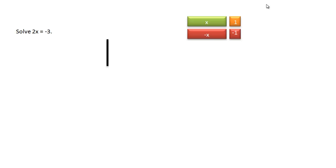For the second example, we're asked to solve 2x equals negative 3. So again, we need some of these positive x tiles. I need 2 total. And then I need 3 of the negative 1 tiles. So we'll grab 1, 2, and 3.